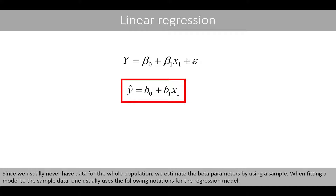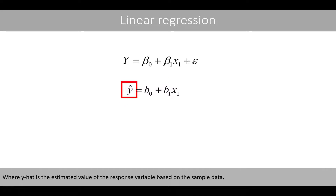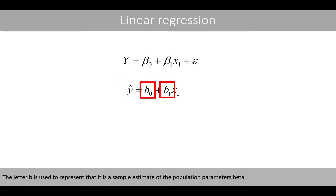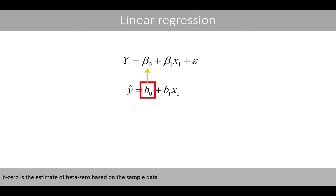When fitting a model to the sample data, one usually uses the following notations for the regression model, where y-hat is the estimated value of the response variable based on the sample data. The letter b is used to represent that it is the sample estimate of the population parameters beta. b0 is the estimate of beta0 based on the sample data, and b1 is the estimate of beta1.